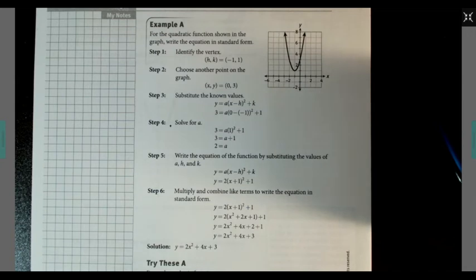Step 1: Identify the vertex. Choose another point on the graph. Substitute the known values. Solve for A. Write the equation of the function by substituting the values of A, H, and K. Multiply and combine like terms to write the equation in standard form.